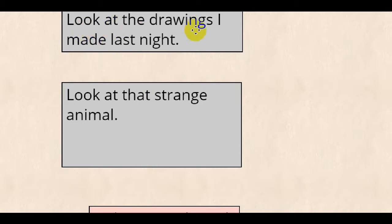Look at the drawings I made last night. Look at the strange animal. So here, the meaning of look at is what? To observe something. To see it, you know. But with intention to see it. There is a reason for this. You got it? There is a reason for you to see the thing.